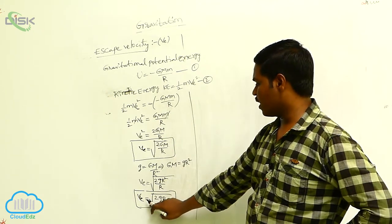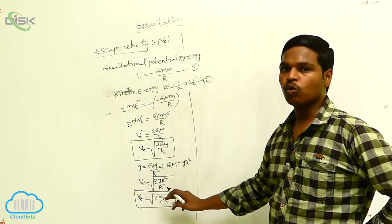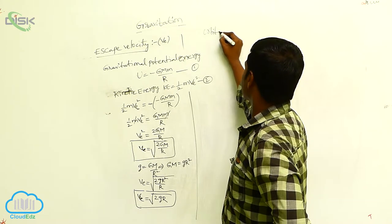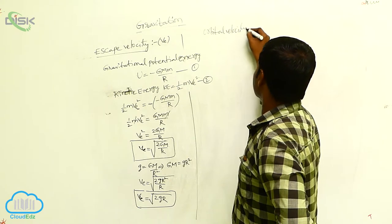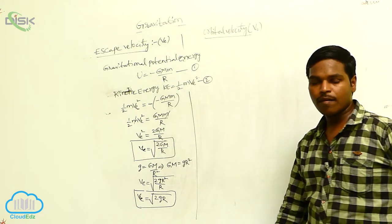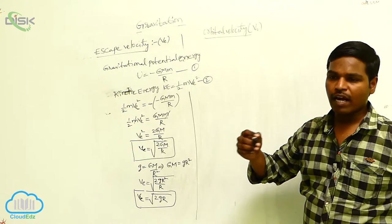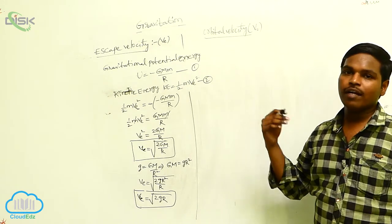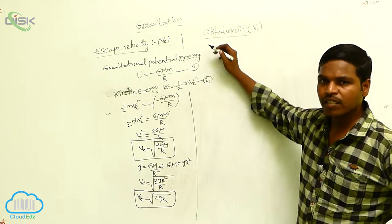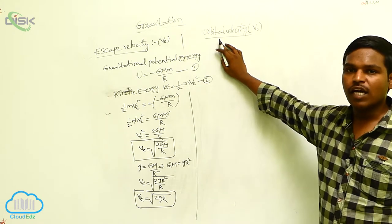Then Ve equals the square root of 2GM by R, or equivalently Ve equals the square root of 2gR. Now, orbital velocity — denoted V₀ — means the velocity required for an object to revolve around the planet.